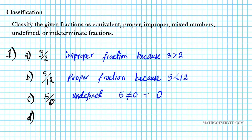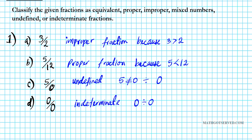Now how about this fraction right here? What if we have 0 over 0? This is an indeterminate fraction. Why is it indeterminate? Anytime you have 0 divided by 0, you have an indeterminate number.